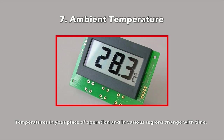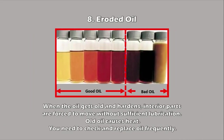An issue that closely relates to clogged passages within a compressed air system is the problem of diminished oil quality — specifically eroded oil. When the oil gets old and hardens, interior parts are forced to move without sufficient lubrication. The surfaces of metal parts grind against one another and components endure strain as the machine is forced to work extra hard just to perform at its prior level. Old, hardened oil is a primary culprit in the cause of system heat. As parts wear down, you will typically need to replace the oil at more frequent intervals. If the air compressor emits a burnt oil smell, that is a tell-tale sign that the oil has hardened at the expense of the compressor's cooling abilities. Alternately, heat could cause the oil to lose its viscosity and lead to further problems.